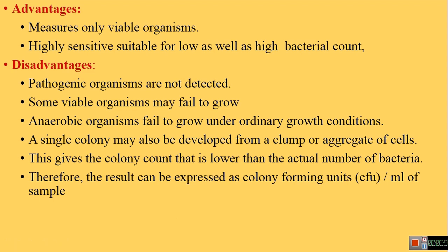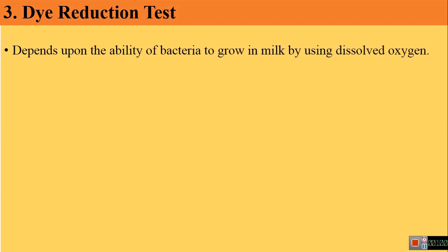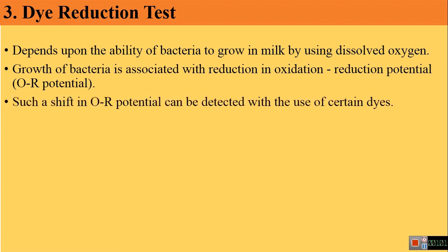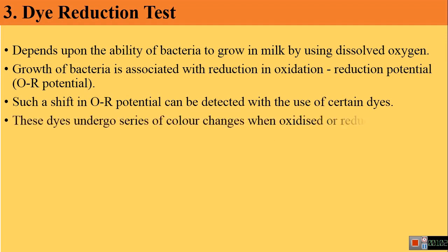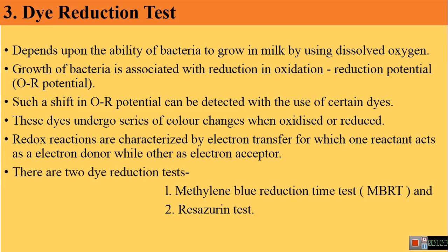The third method of microbiological examination of milk is the Dye Reduction Test. These tests are based on the ability of bacteria to grow in milk by using dissolved oxygen. Growth of bacteria in milk is associated with oxidation-reduction potential. Shifts in this potential can be detected by certain dyes that undergo color changes when oxidized or reduced. The redox reactions are characterized by electron transfer — one reactant acts as an electron donor and the other as an electron acceptor. There are two types: the Methylene Blue Reduction Time test (MBRT) and the Resazurin test.